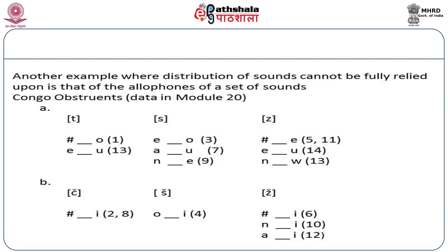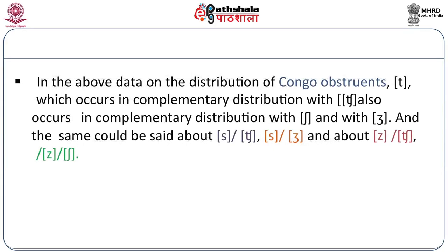Similarly, /tʃa/ never occurs before /e/ but /ʃa/ occurs before /e/, and /za/ never occurs before /e/ but /ʃa/ occurs before /e/. On the basis of distribution, we conclude that /ta/ and /tʃa/ are allophones. But looking closely, it is not only /tʃa/ which occurs in complementary distribution with /ta/, but also /ʃa/ which occurs in complementary distribution with /ta/.